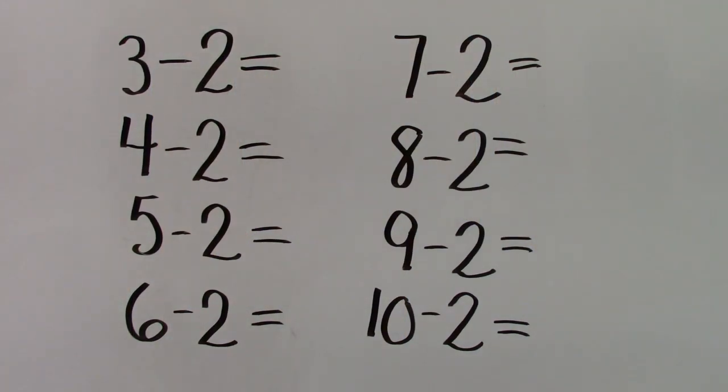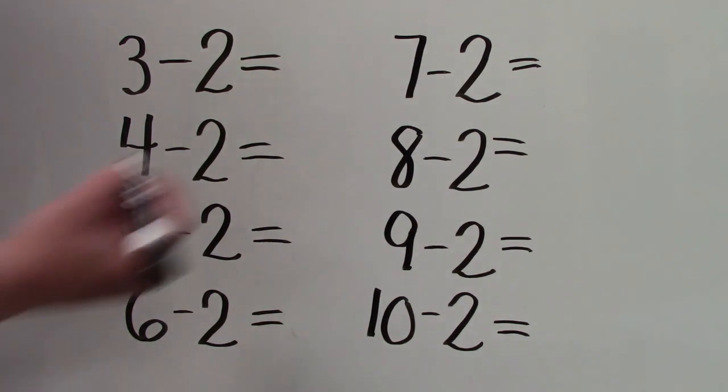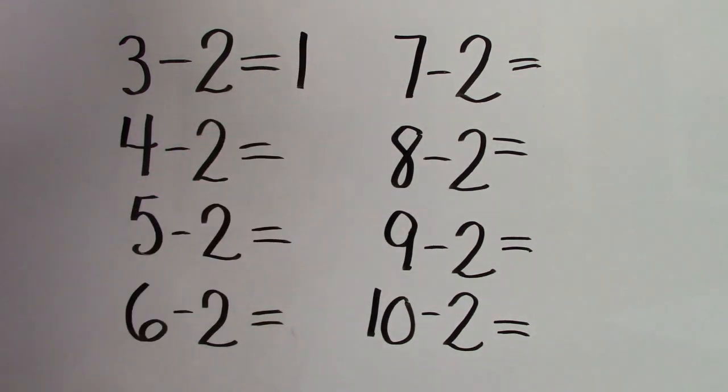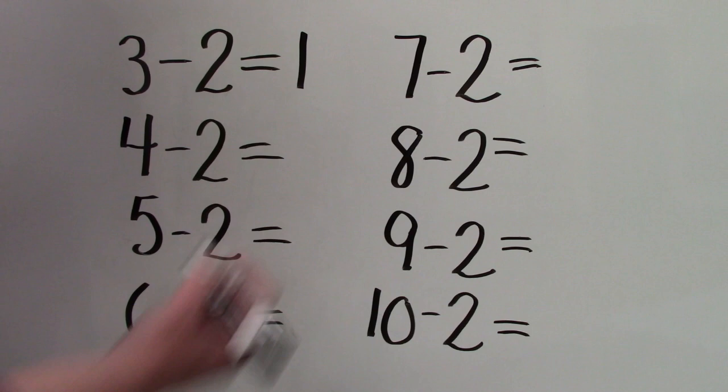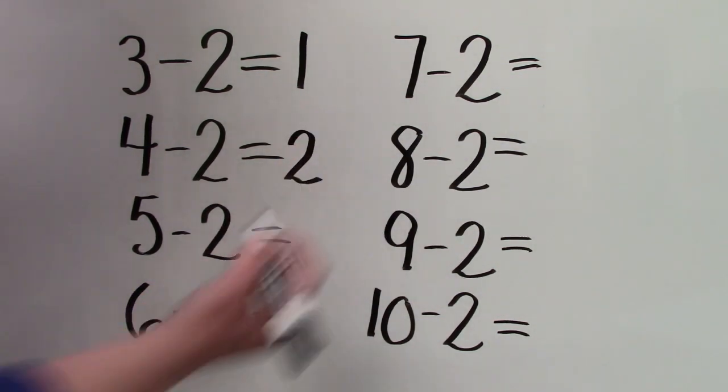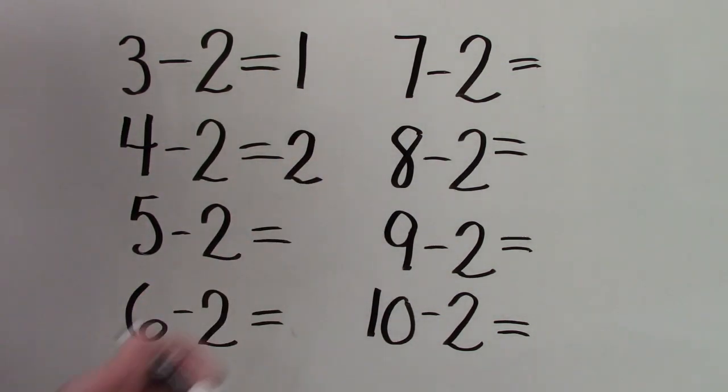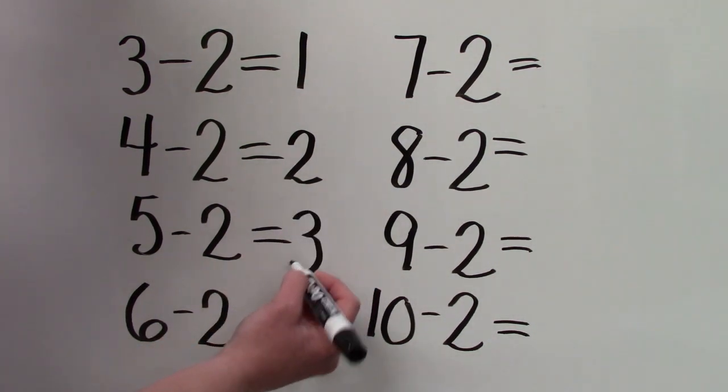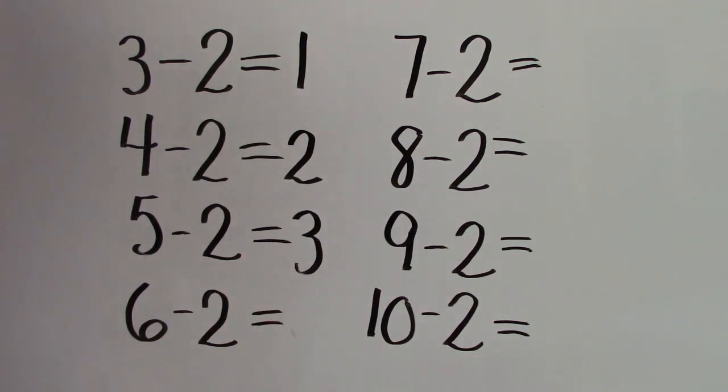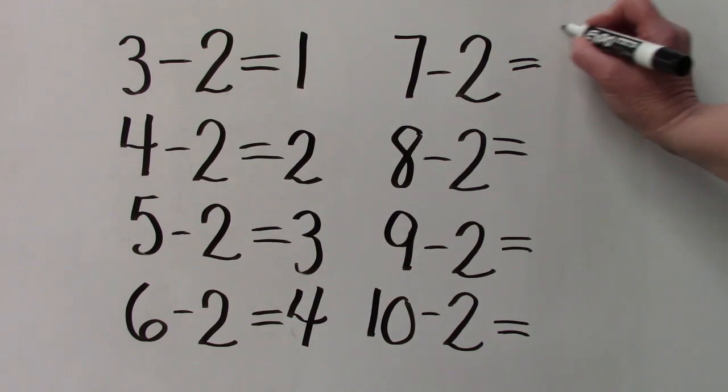Let's look at these questions together. 3 minus 2 is 1. 4 minus 2 is 2. 5 minus 2 is 3. Can you guess what 6 minus 2 would be? Have you noticed the pattern yet? It's 4. And then we have 7 minus 2. Our answer is 5.